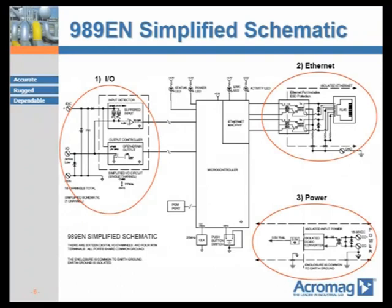This slide shows the simplified circuit diagram of the 989EN units, illustrating three things. First, all I/O channels have surge suppression technology built in. Second, the Ethernet 10/100 port includes built-in surge suppression and safety isolation from the rest of the circuit. Third, the power circuit also includes built-in surge suppression and safety isolation. This design offers three-way isolation between power, network, and I/O, and includes built-in electrical fast transient and electrical surge suppression technology on all channels and ports.